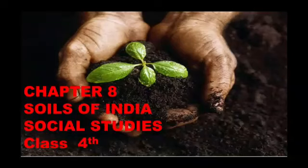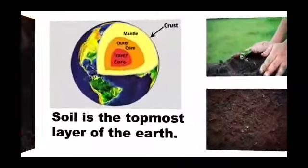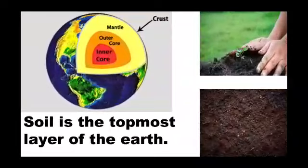Good morning children, let us begin with a new chapter: Soils of India. We all know the soil is the topmost layer of the earth that we can see. It has air spaces, water, nutrients, and thus plants grow on the soil. Even small animals make their shelter in it. So children, let us learn more about this top layer of the earth.